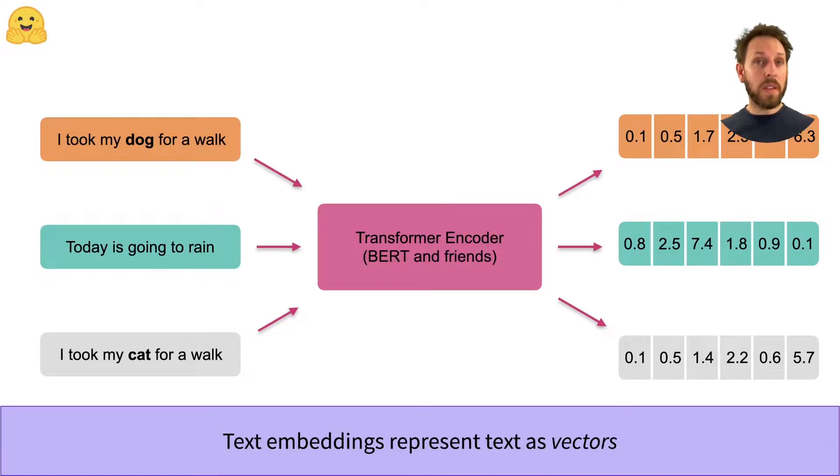To create these embeddings, we usually use an encoder-based model like BERT. In this example, you can see how we feed three sentences to the encoder and get three vectors as the output.